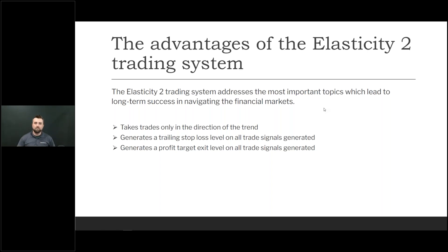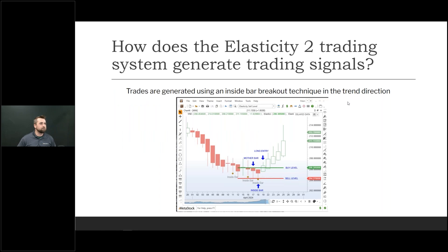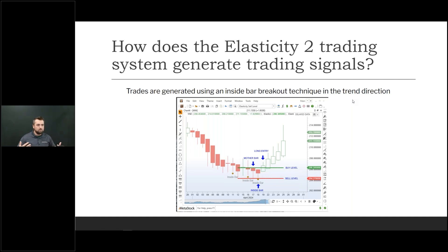I'm going to let you know some of the questions we'll be answering in the demonstration. We'll breeze through this PowerPoint real quick and then jump inside the software for a demo. So how does the Elasticity 2 trading system generate its trading signals? There's a lot going on in the background, but the main part is that trades are generated using an inside bar breakout technique, as long as it's within the trend direction.